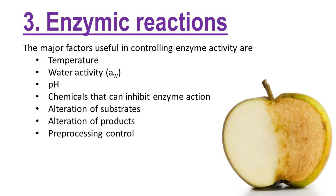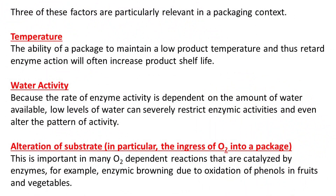The major factors useful in controlling enzyme activity are temperature, water activity, pH, chemicals that can inhibit enzyme action, alteration of substrates, alteration of products, and pre-processing control. Three of these factors are particularly relevant in a packaging context. First, temperature: the ability of a package to maintain a low product temperature and thus retard enzyme action will often increase product shelf life. Second, water activity, because the rate of enzyme activity is dependent on the amount of water available. Low levels of water can severely restrict enzymic activities and even alter the pattern of activity. Finally, alteration of substrate: the ingress of oxygen into a package is important in many oxygen-dependent reactions catalyzed by enzymes, for example, enzymic browning due to oxidation of phenols in fruits and vegetables.